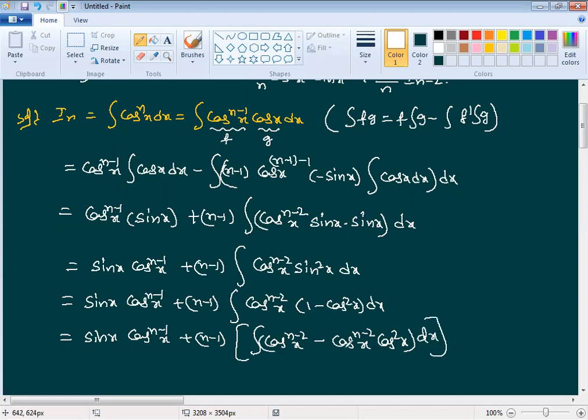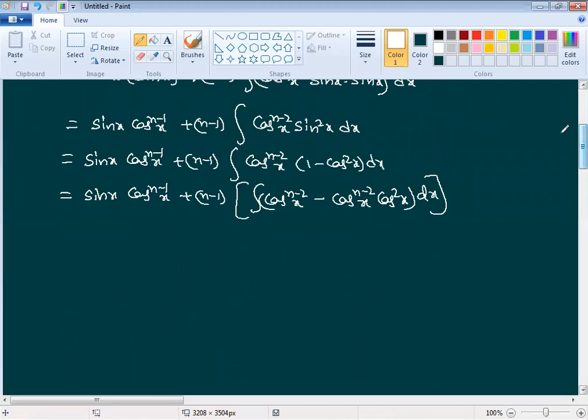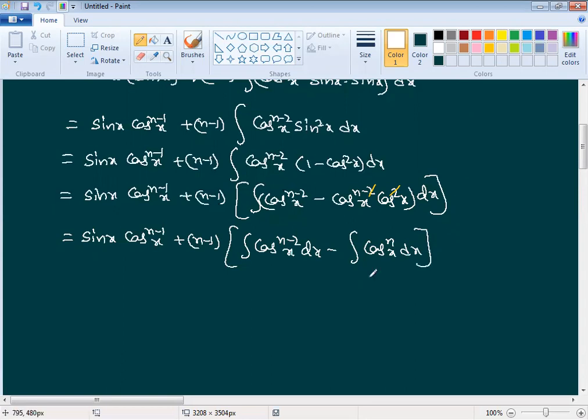Next step: separate the integration into two parts. This gives sin x cos power n minus 1 x plus n minus 1 into integral cos power n minus 2 x dx minus integral cos power n minus 2 plus 2 which cancels, leaving cos power n x dx.